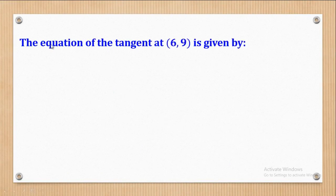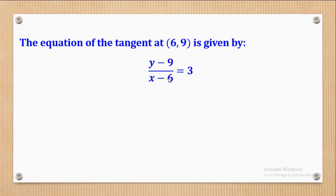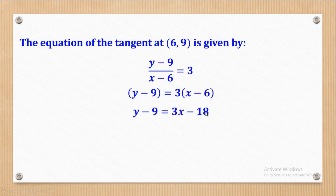Having got the gradient of the tangent, we shall now get the equation of the tangent at point (6, 9). We say: change in Y, where 9 is the Y coordinate, over change in X, where 6 is the X coordinate, equals the gradient of the tangent. We cross multiply to get Y minus 9 equal to 3 times (X minus 6). Opening the brackets and making Y the subject gives Y equal to 3X minus 9. This is the equation of the tangent at point (6, 9).